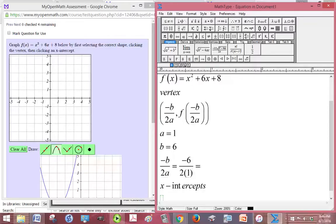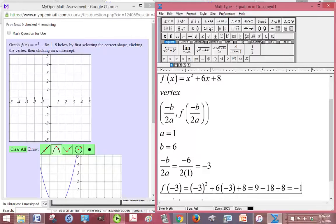Now we plug negative 3 in for x in our function, so I get negative 3 squared plus 6 times negative 3 plus 8. Well, that's going to be 9 minus 18 plus 8, so 9 minus 18 is negative 9 plus 8 is a negative 1.